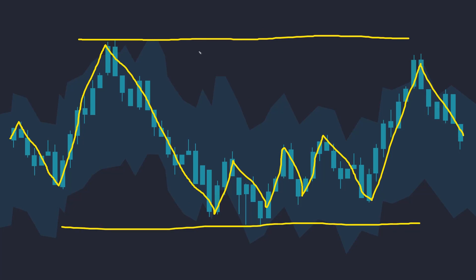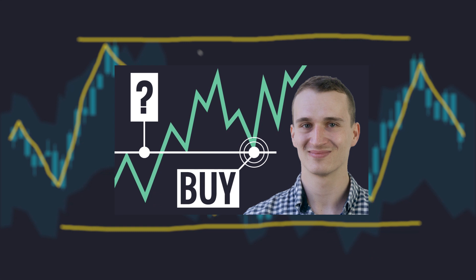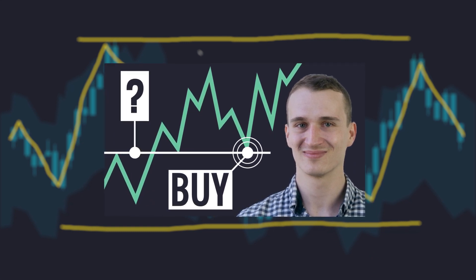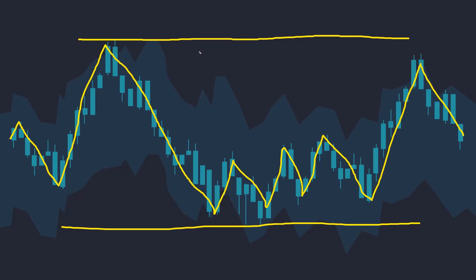As long as the market is in range, there's a high likelihood that it will reverse back into it. This process can be repeated a number of times until the market makes a breakout of this range and starts trending for a while. The mean reversion trading approach aims to exploit this phenomenon of the market trading in a temporary price range and the price reverting back to its average or mean — hence the name mean reversion.